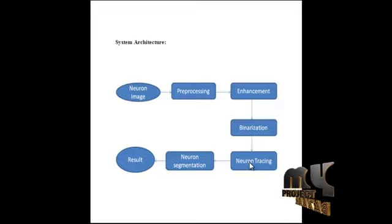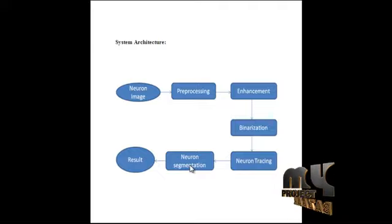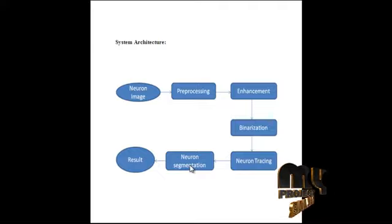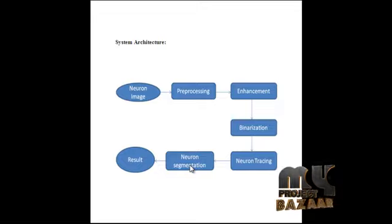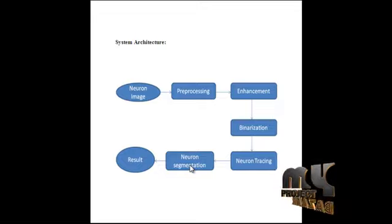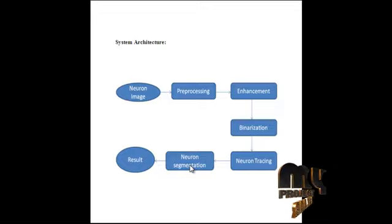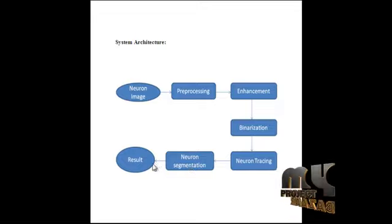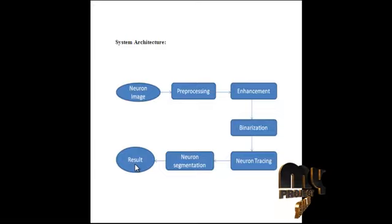After neuron tracing, the result is passed to neuron segmentation. After finding the neuron, the segmented neuron is mapped to the original image. Finally, the mapped image is displayed and we obtain the segmented result of the neuron.